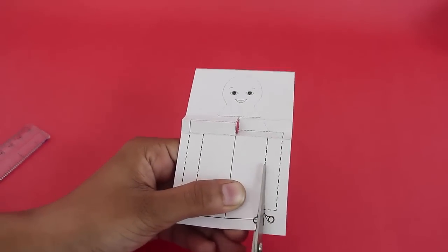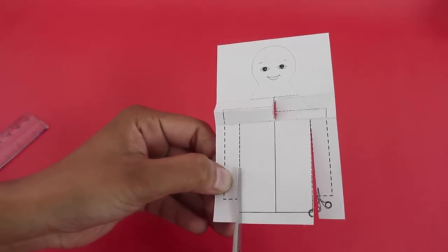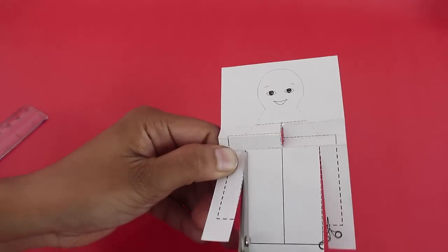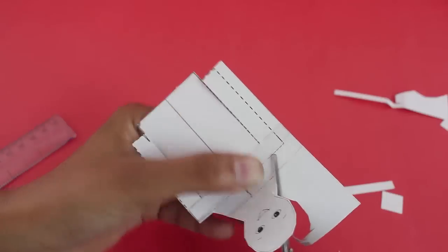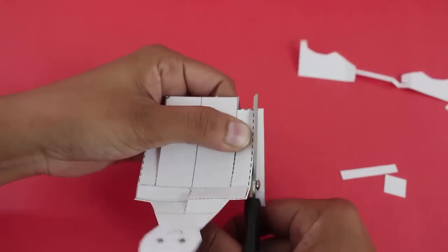Then cut the rectangles for the two hands. These are the two arms. Also cut the profile of the head and the neck.